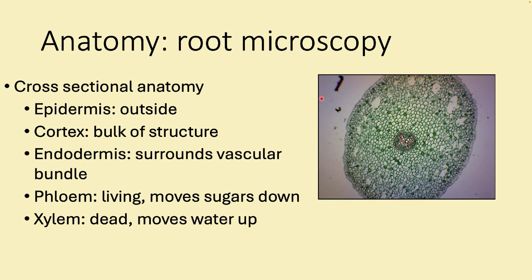In cross-section, a root has an outer epidermis, a cortex in the middle, and an inner ring called the endodermis. Inside that are the vascular tissues: xylem on the outside and phloem in the center. Phloem is alive, but xylem is actually dead — the plant intentionally kills off these tissues because they need to be dead to function properly.